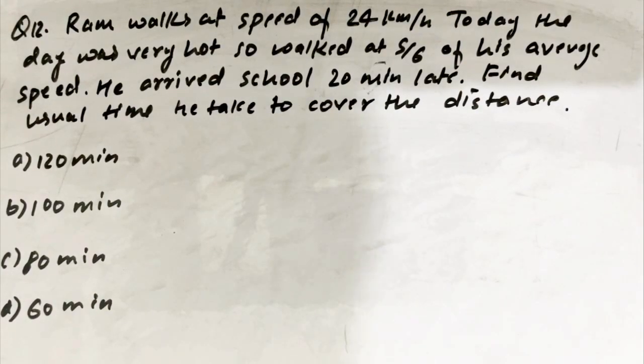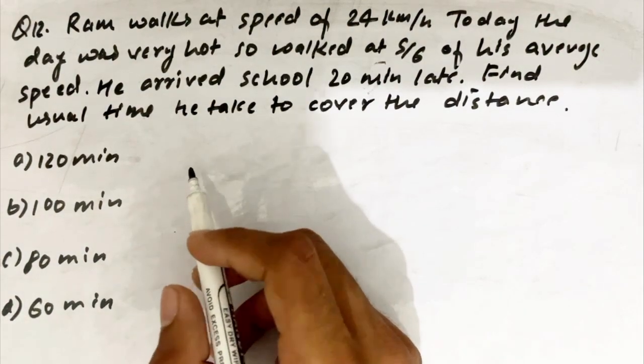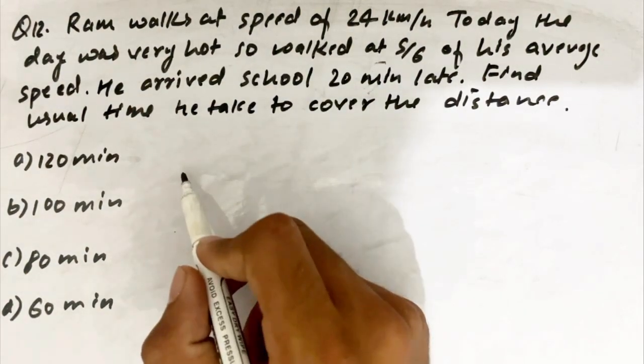Ram walks at speed of 24 km per hour. Today the day was very hot so he walked at 5/6 of his average speed. He arrived school 20 minutes late. Find usual time he take to cover the distance.